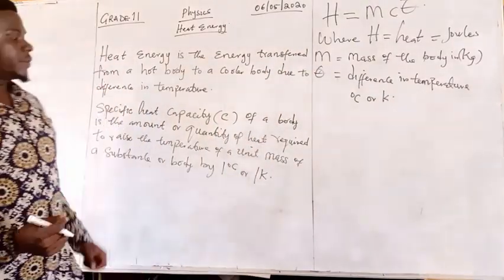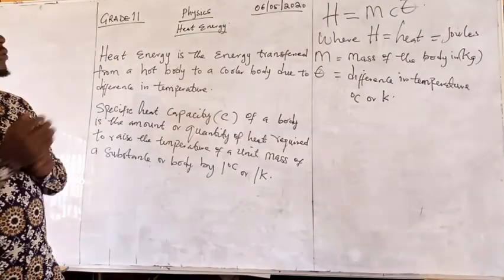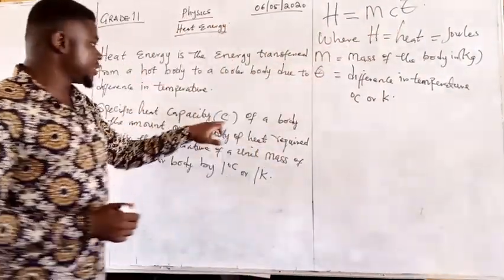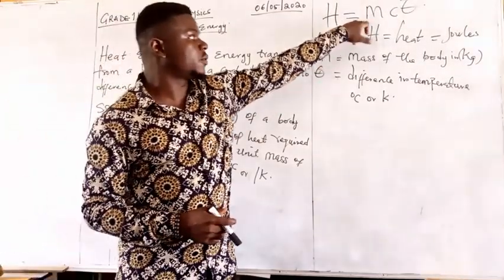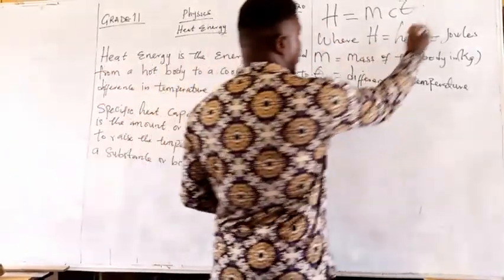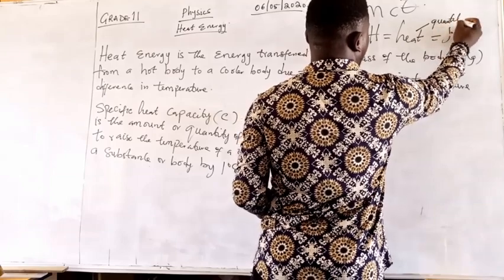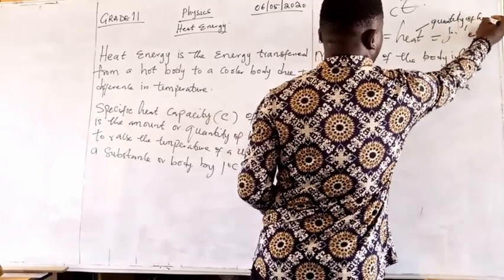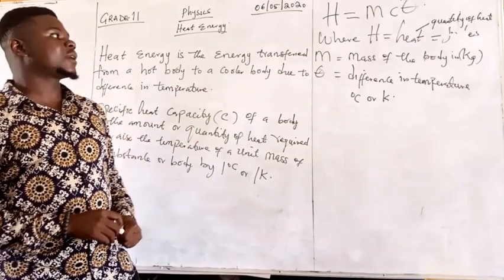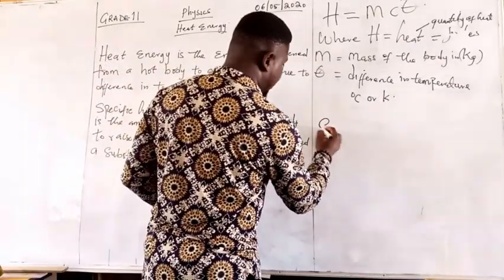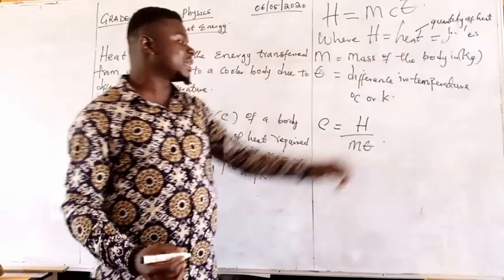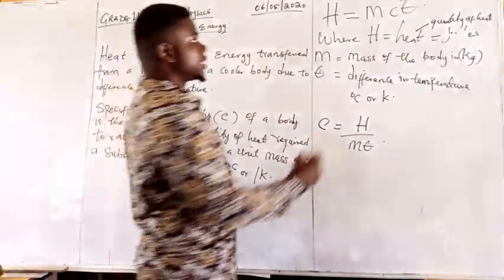You might be asked to look for the specific heat capacity C, the mass of the substance, the temperature change, or the quantity of heat. If you are asked to look for the specific capacity using this same formula, it can be given as C = H/(mθ). You make C the subject of the formula by dividing both sides by mθ.